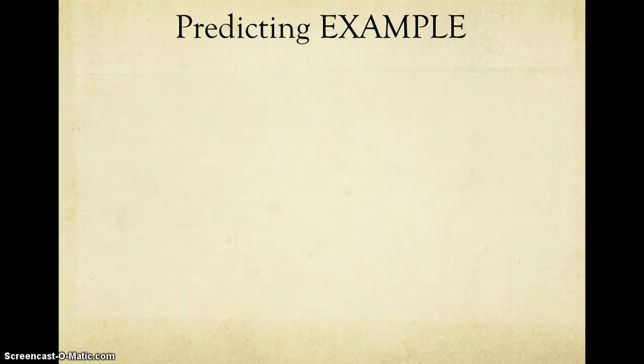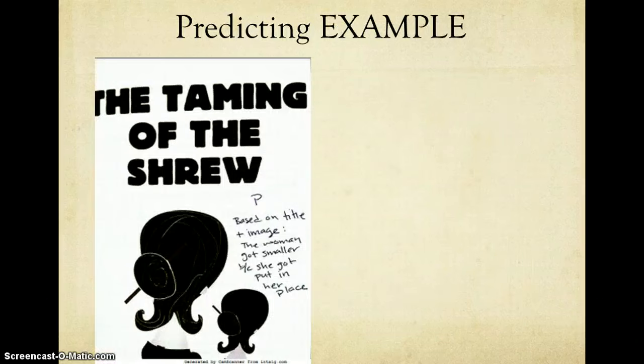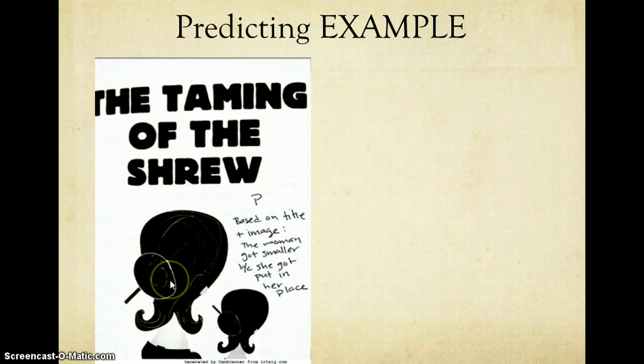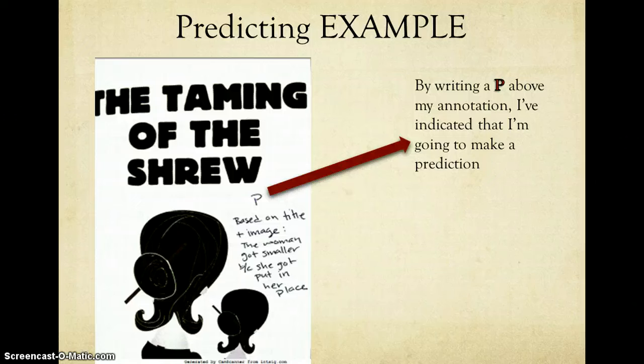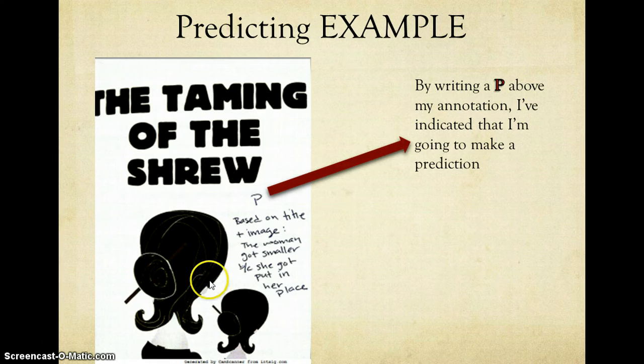Let's get to the example. I am going to be looking at the cover of Taming of the Shrew. In this cover, it has the title and it has an image, much like most covers for most books. One thing that good readers do is looking at the covers to predict what's going to happen in the story, so that's exactly what I'm doing here. The P you see that I wrote above the annotation indicates that I'm going to make a prediction. The prediction that I made is based on the title and the image. I'm predicting that the woman, because I'm predicting that these are the same woman, got smaller because she got put in her place.